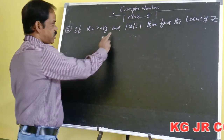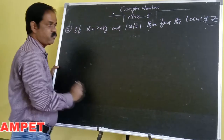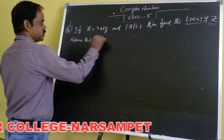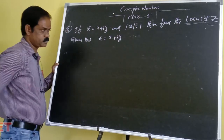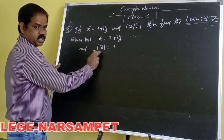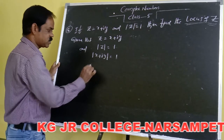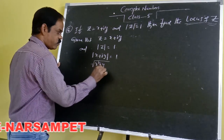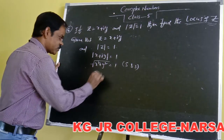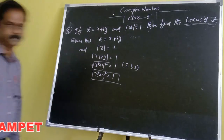Fifth problem: if Z equals x plus iy and the modulus of Z is equal to 1, find the locus of Z. Given that Z equals x plus iy and the modulus of Z is equal to 1. The modulus of x plus iy is the square root of x squared plus y squared, which equals 1. Squaring both sides, x squared plus y squared equals 1. This is the locus of Z.